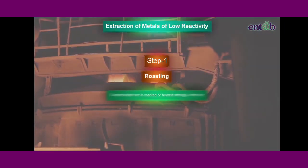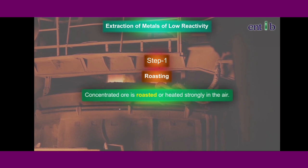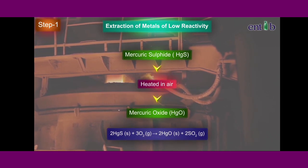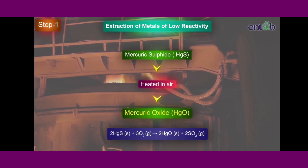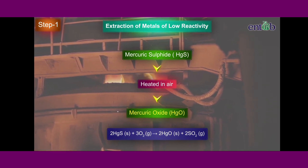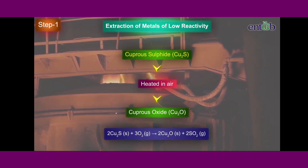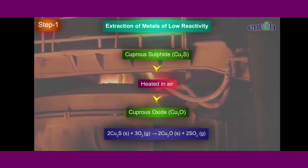In this step, the concentrated ore is roasted or heated strongly in the air. Mercuric sulphide is oxidized to mercuric oxide or HgO. Whereas, cuprous sulphide is oxidised to cuprous oxide or Cu₂O.